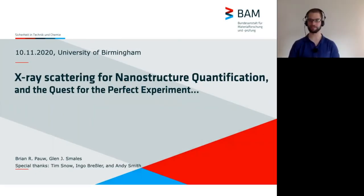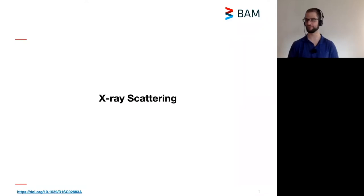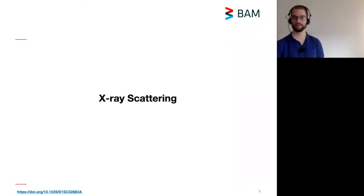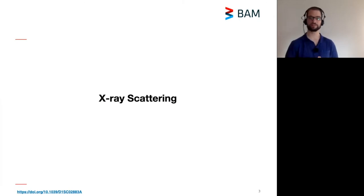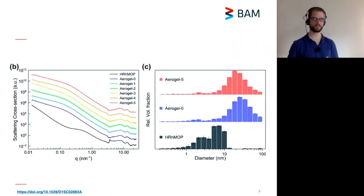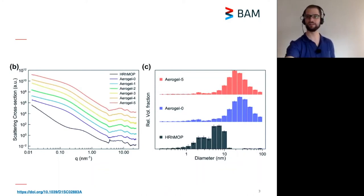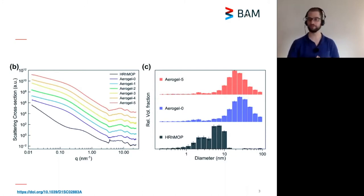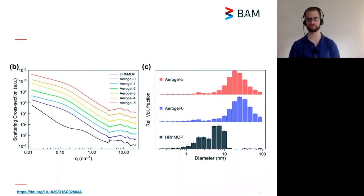My name is Brian Powell, and I am here to talk about x-ray scattering. Since I only have 40 minutes, I will dive right in. X-ray scattering is a technique to characterize the nanostructure in your materials. We measure scattering patterns and then we can turn this into size distributions, getting structural information out for pretty much any material which has a fine structure inside.